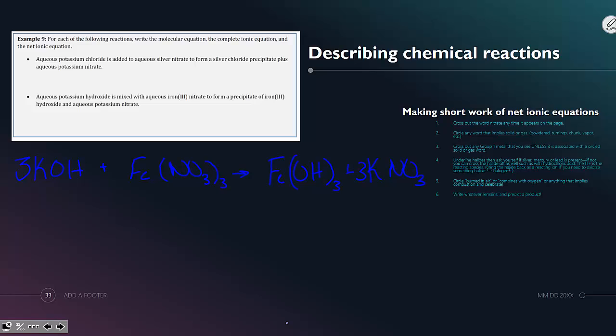Once we have a balanced reaction, we can begin writing our complete ionic equation. The complete ionic equation is to break up everything that is soluble. Three potassium hydroxides would make three potassium cations and three hydroxide anions. Iron 3 nitrate will break up into iron 3 and three nitrate anions.